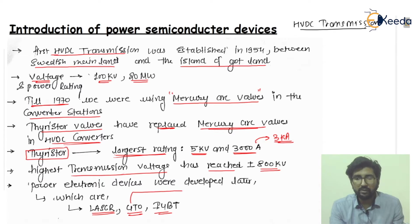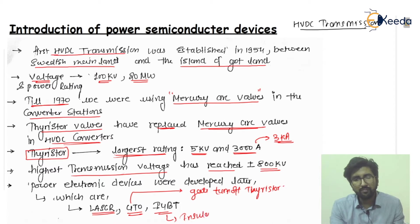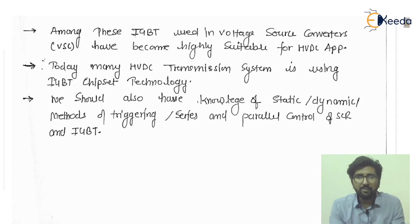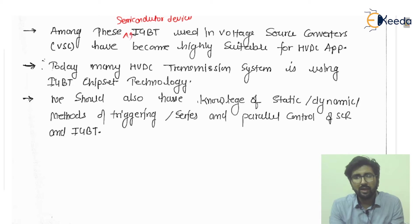The GTO, which I have already discussed, is the gate turn-off thyristor. The IGBT is the insulated gate bipolar transistor. Among these semiconductor devices, the IGBT is actually used in the voltage source converter.